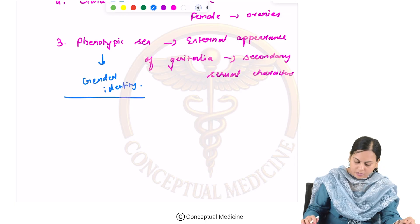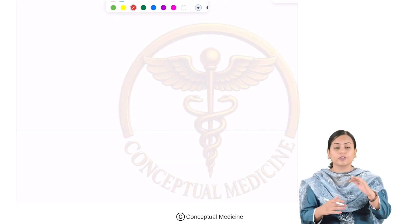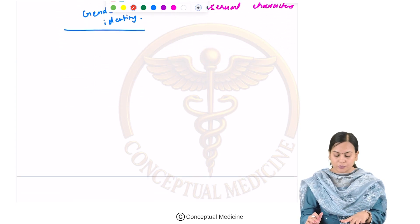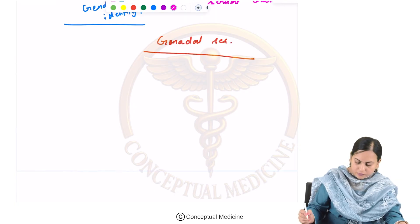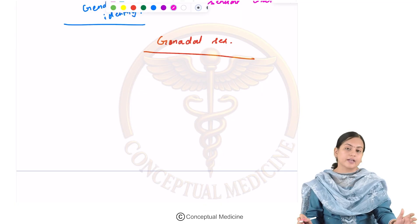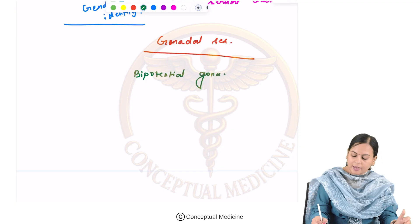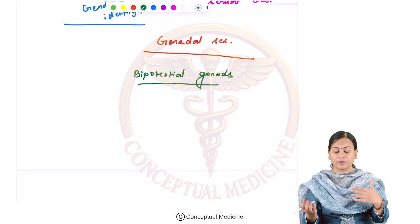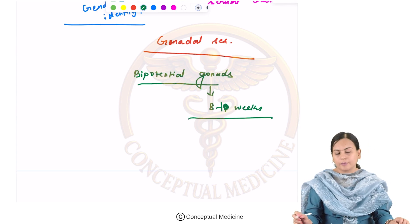Now let's see how gonadal sex development happens during the embryonic period, as that is what is going to decide phenotypic sex also. The development of male gonads happens much earlier compared to female gonads. Generally the gonads are bi-potential, meaning they have the capacity to develop into either male or female until eight to ten weeks of embryonic life.